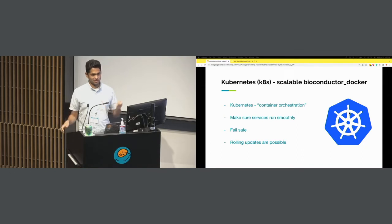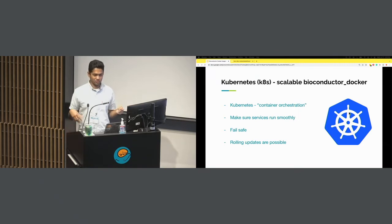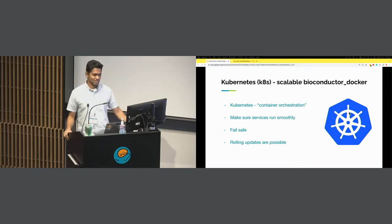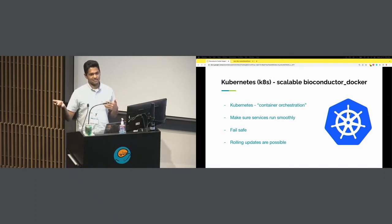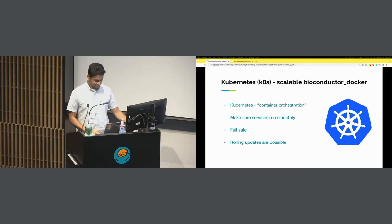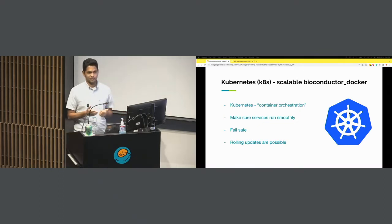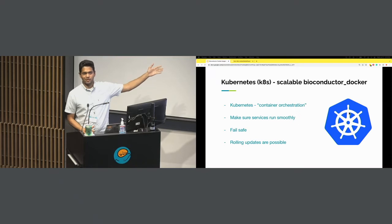Kubernetes makes sure containers don't suddenly break or fail — it keeps everything running smoothly and is fail-safe. In the event something goes down, it brings it back up. You can also do rolling updates: if you want to make a change to your image, you can do it on the fly. Kubernetes essentially handles deployment, scaling, and management of any containerized application — in our case, the Bioconductor Docker image.